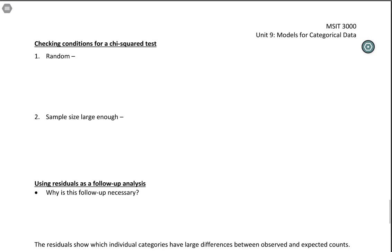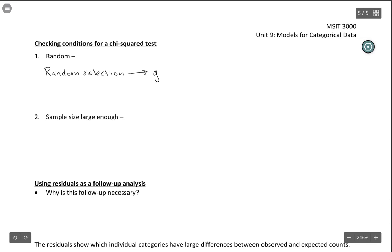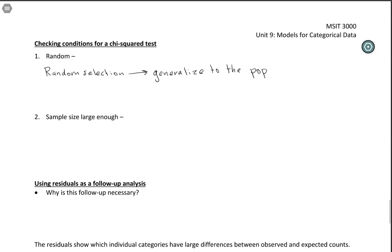Both of these tests have the same conditions. As usual, we need to have some kind of randomness. Random selection, or at the very least a representative sample, allows you to generalize to the population. The example with MSIT students and their housing is one where we want to generalize to all MSIT 3000 students, so we need at least a representative sample.